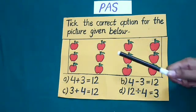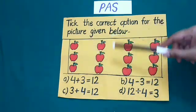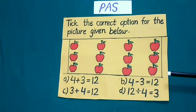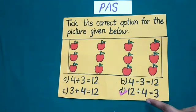Look at the picture here 12 apples are divided in 4 groups and in each group there are 3 apples. So the correct option is option d, 12 divided by 4 is equal to 3.